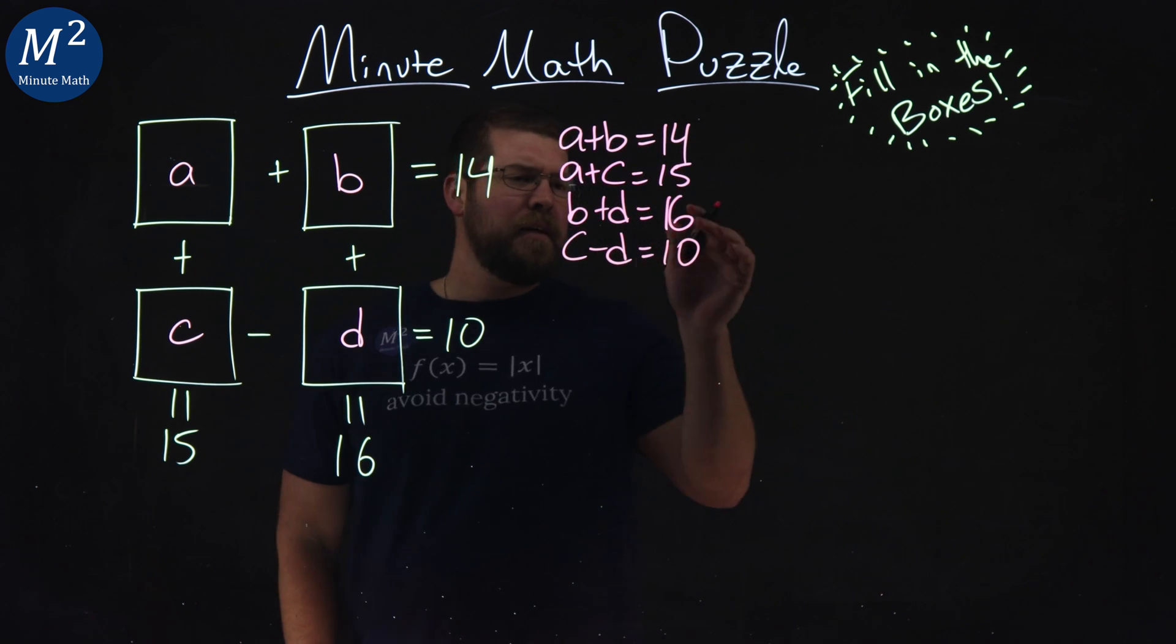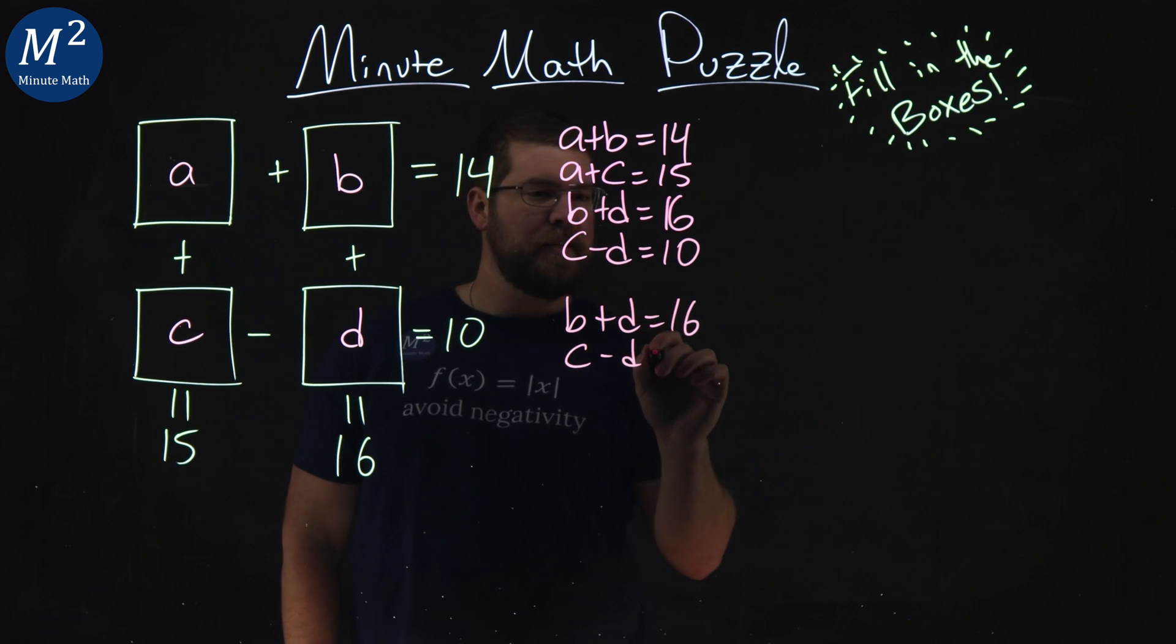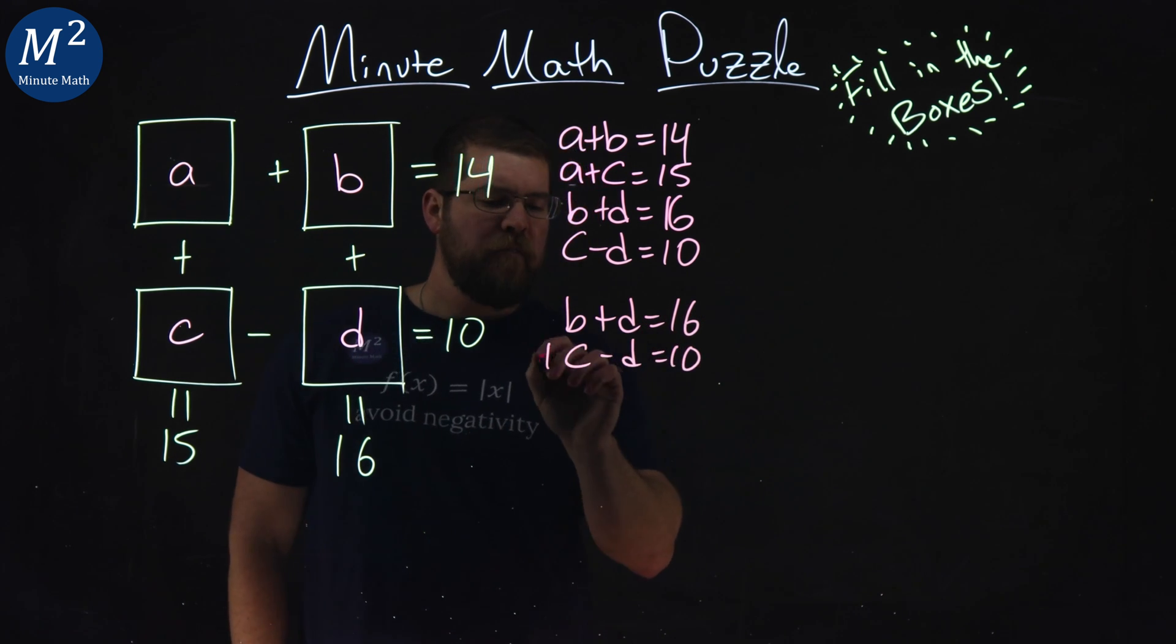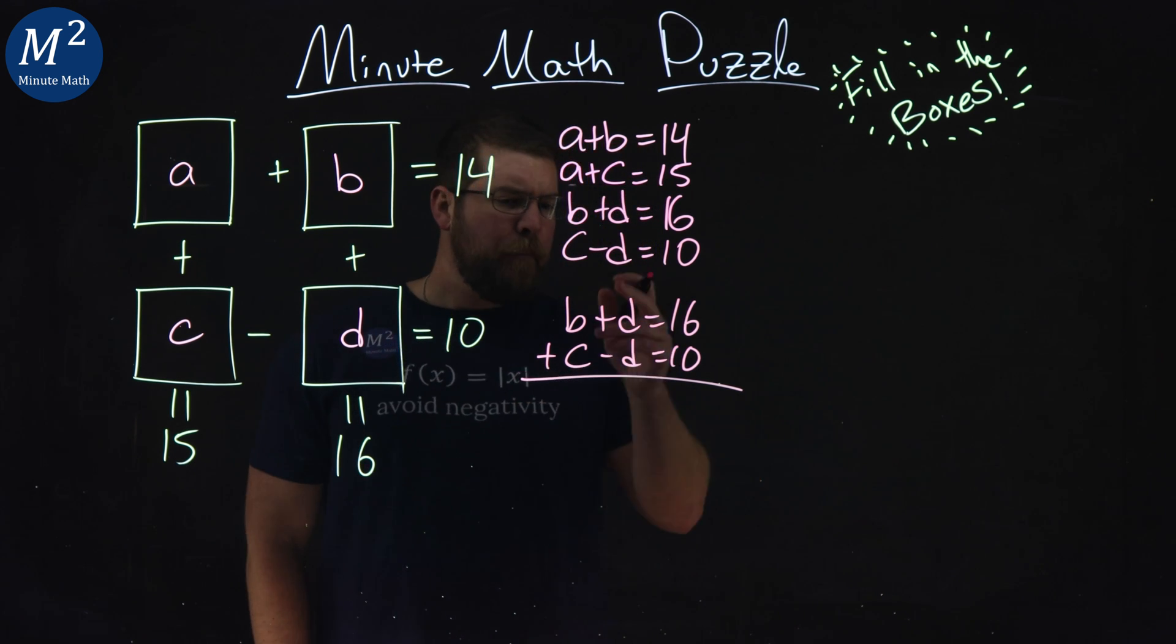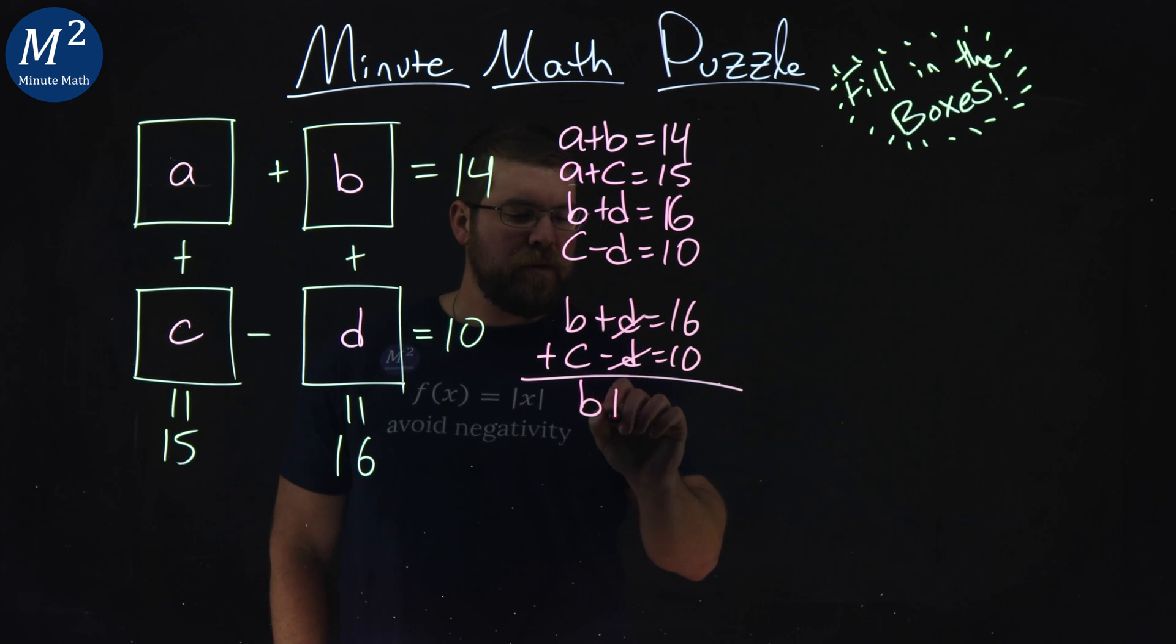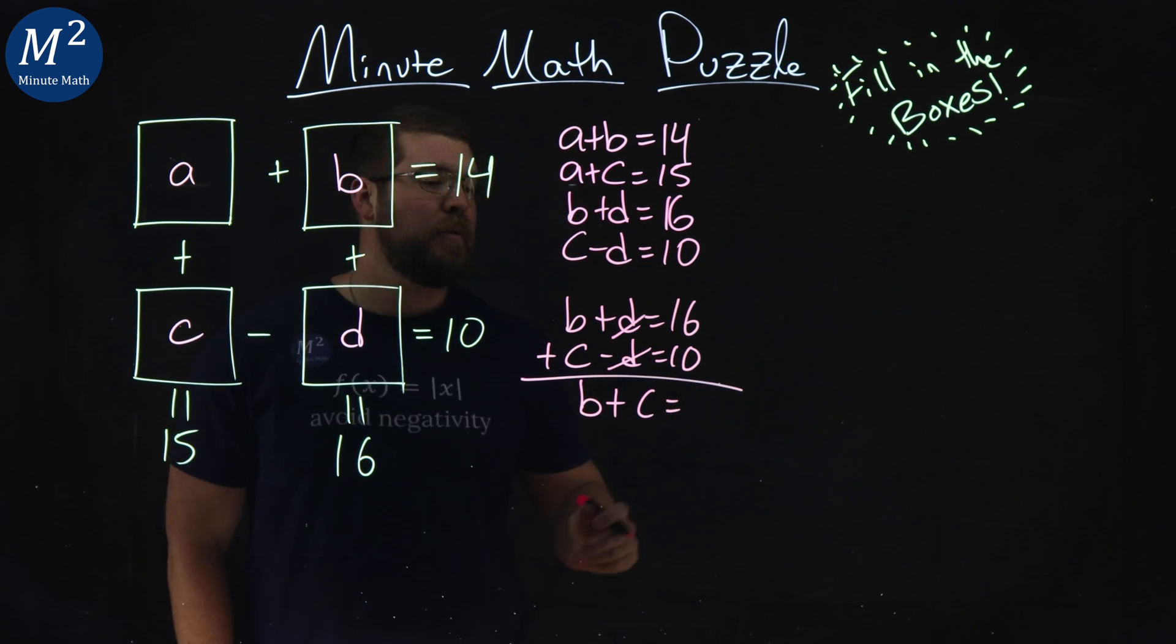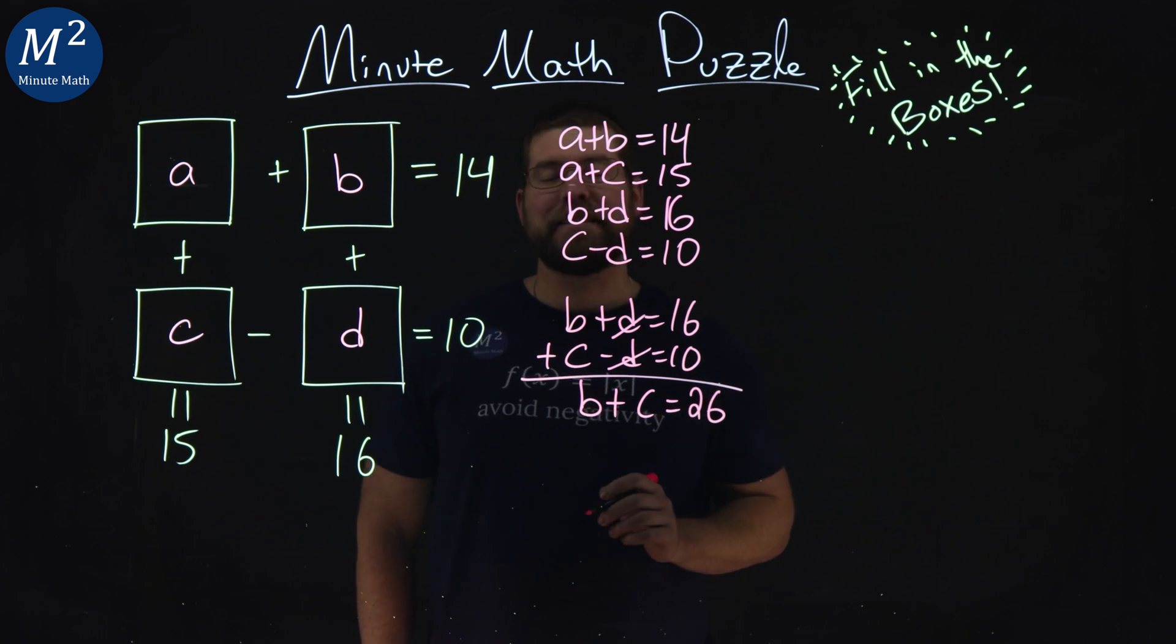So first, let's look at B plus D equals 16 and C minus D equals 10. If I add these two equations, the last two together, my Ds cancel out. Now we have B plus C is equal to 16 plus 10, which is a good old 26.